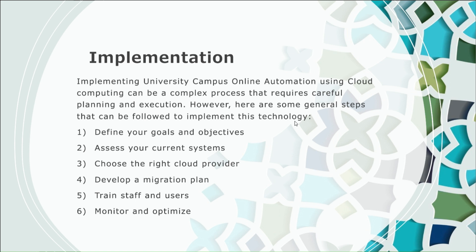Monitor and optimize. Monitor the performance of your cloud-based system and make adjustments as needed to optimize efficiency and effectiveness. Implementing university campus online automation using cloud computing can bring many benefits to a university, but it is important to approach it strategically and carefully. By following these steps, you can help ensure a successful implementation that meets your goals and provides a better experience for students and staff.